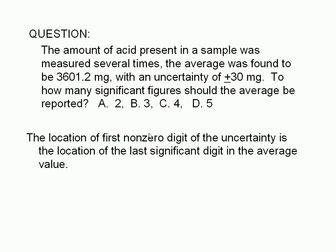The location of the first non-zero digit in the uncertainty is the location of the last significant digit in the average value. The first non-zero digit in the uncertainty is 3, which is in the tens place.